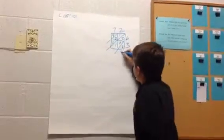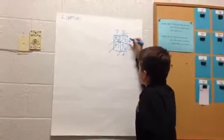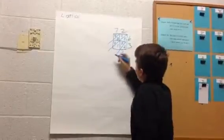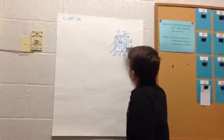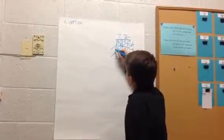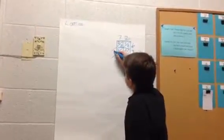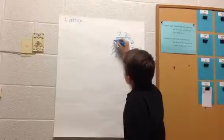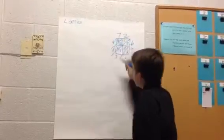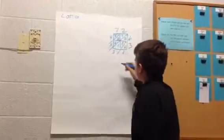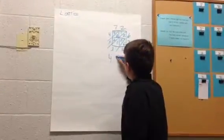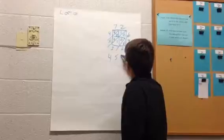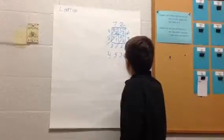And then you're going to put the numbers, and if there's several numbers, then you're going to add them together. And then you're going to put all the numbers together, so 4,536.